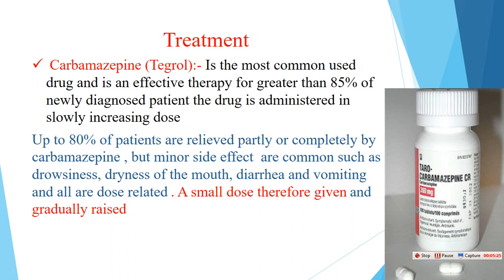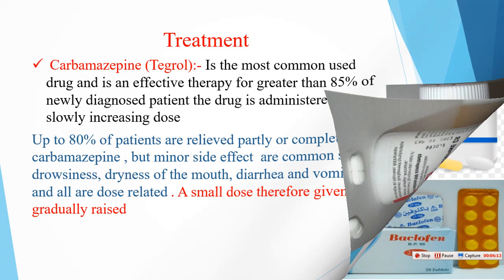Treatment of trigeminal neuralgia: Carbamazepine (Tegretol) is the most commonly used drug. It is effective in about 85% of newly diagnosed patients, and up to 80% of patients can be completely or partially relieved by this drug. However, it has side effects such as diarrhea, drowsiness, tightness of the mouth, and vomiting. Therefore, small doses starting at 100 mg are given gradually and then increased until the pain is relieved.